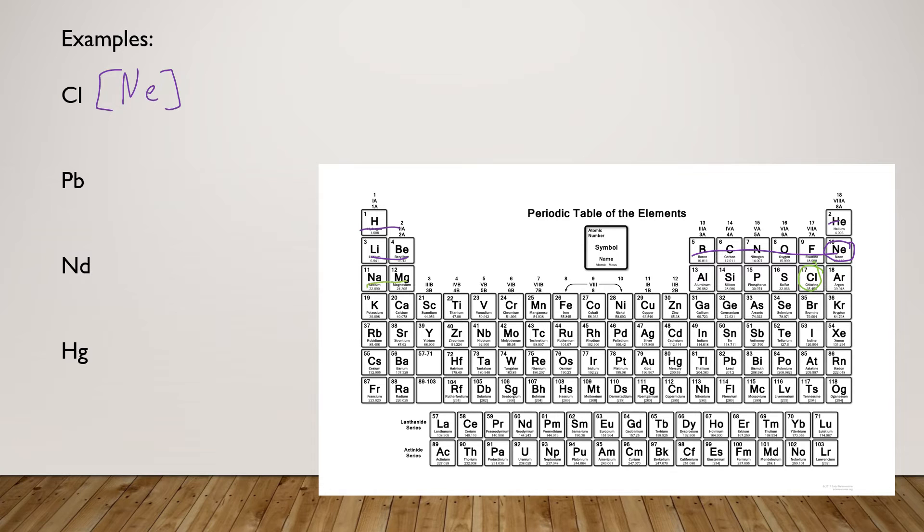Then we're going to go to 3s2, and if you know your pattern, this should be pretty easy. We go through 3s2 and then we simply go to 3p5. That's all you have to do for that instead of writing out all of that.